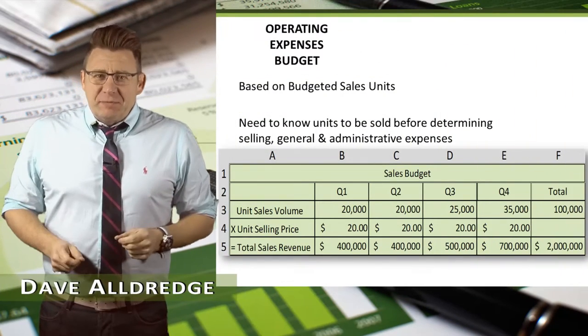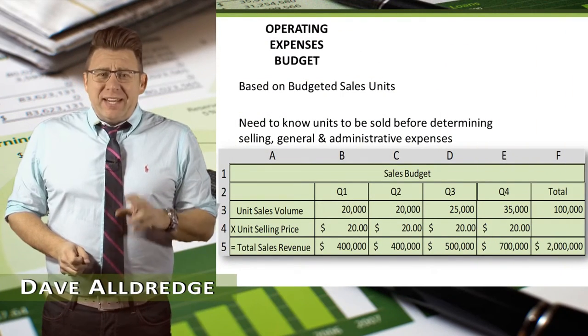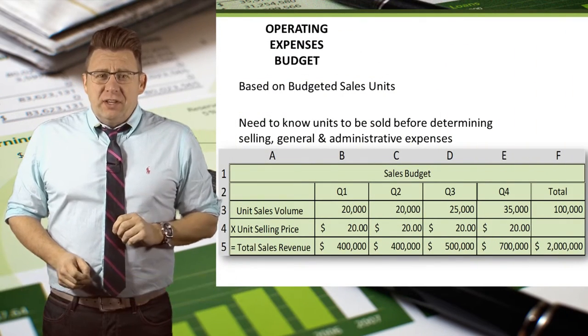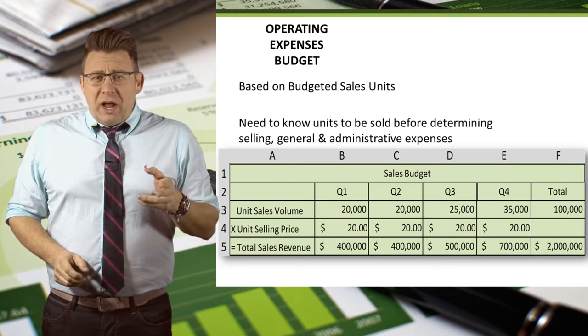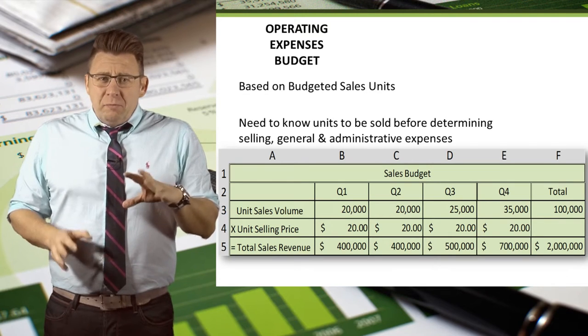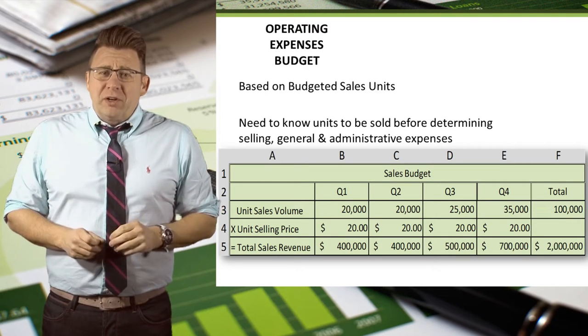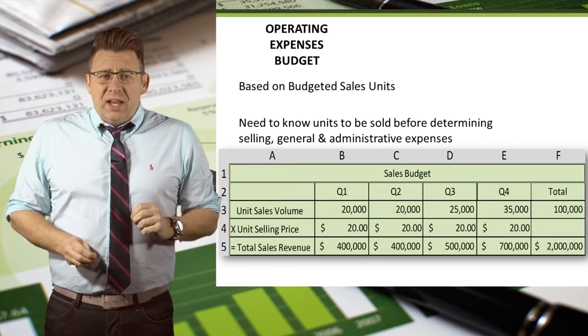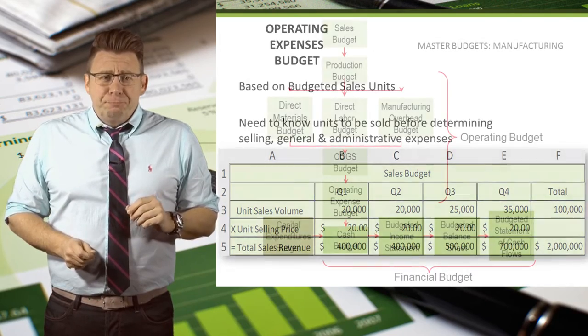The operating expenses budget is based on data from the sales budget. We need to know how many units we're going to sell before we know how much our operating expenses will have.